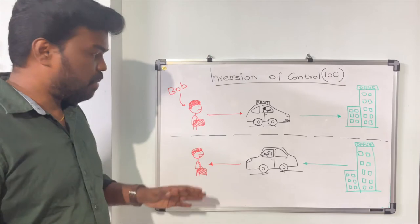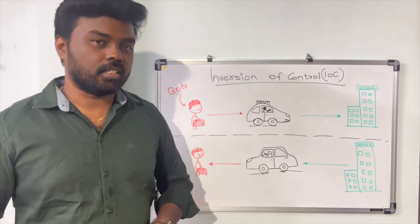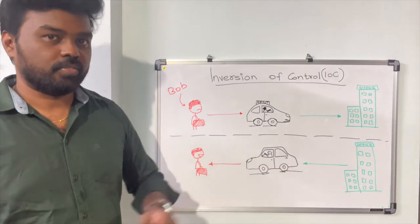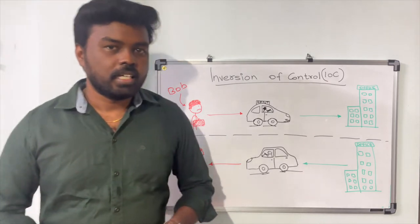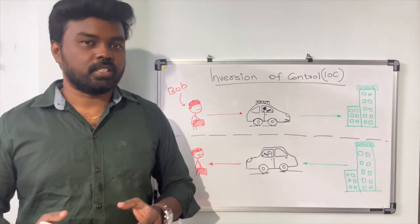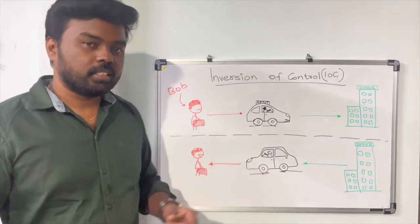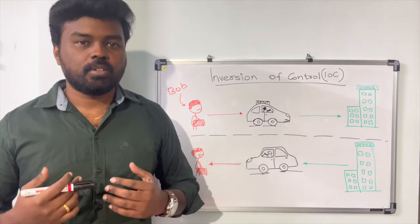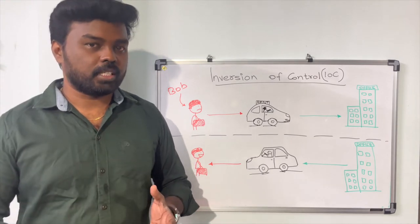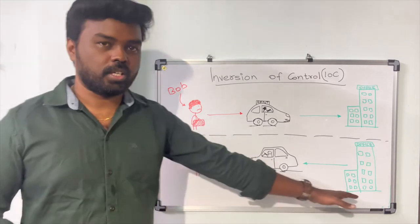Every morning the office sends the car to pick Bob up. This is a good example of inversion of control, because in this case the control for managing the daily commute has been inverted from Bob to the office.